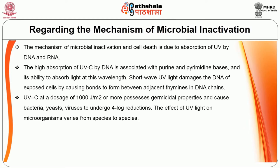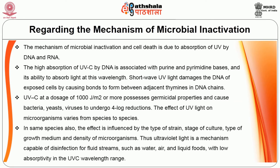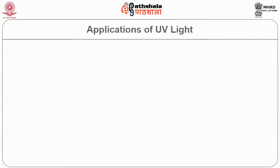UVC at a dosage of 1000 joules per meter square or more possesses germicidal properties and causes bacteria, yeast, and viruses to undergo four log reductions. The effect of UV light on organisms varies from species to species and is influenced by the type of strain, stage of culture, type of growth medium, and density of microorganisms. Thus, ultraviolet is capable of disinfection for fluid streams such as water, air, and liquid foods with low absorptivity in the UVC wavelength range.